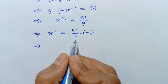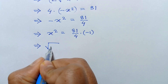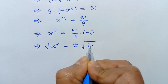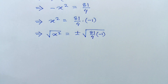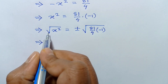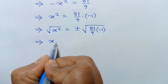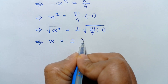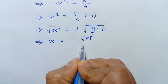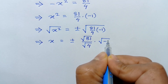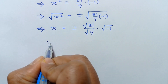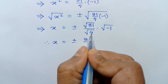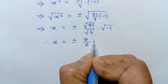Taking the square root of both sides, the square root of x squared is equal to plus or minus the square root of negative 81 over 4. The square root and square cancel, so x equals plus or minus the square root of negative 81 over 4. The square root of 81 is 9, square root of 4 is 2, and square root of negative one is i. So the solution is x equals plus or minus 9i over 2.